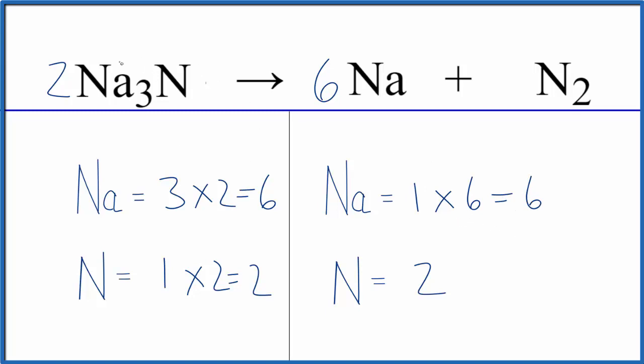If you're going to write the states, you would have a solid for the sodium nitride and a solid for the sodium. The nitrogen N2 would be a gas.